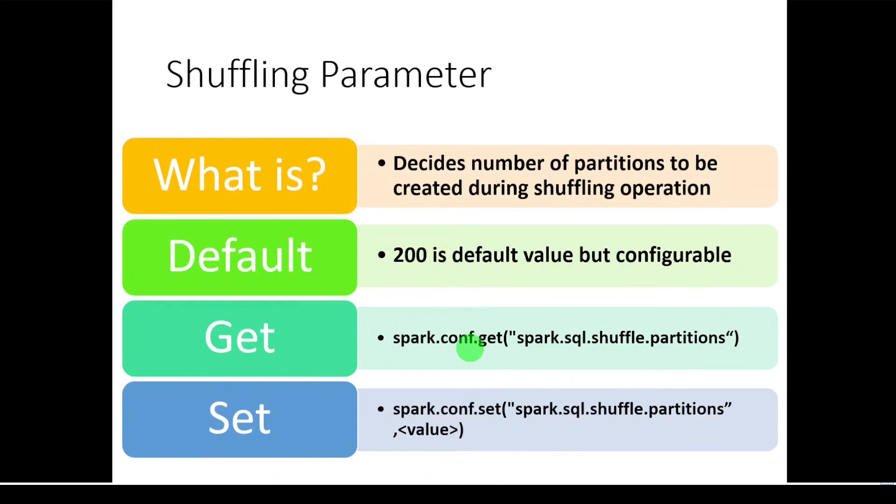Now coming to shuffling parameter, now we understood what is shuffle. Shuffling parameter is nothing but while exchanging the data in between stages, how many number of partitions to be created. By default, the number is 200, which means if we are performing any wide transformation which requires data shuffling in between the stages, at the end of each stage 200 partitions would be created. This is the default value.